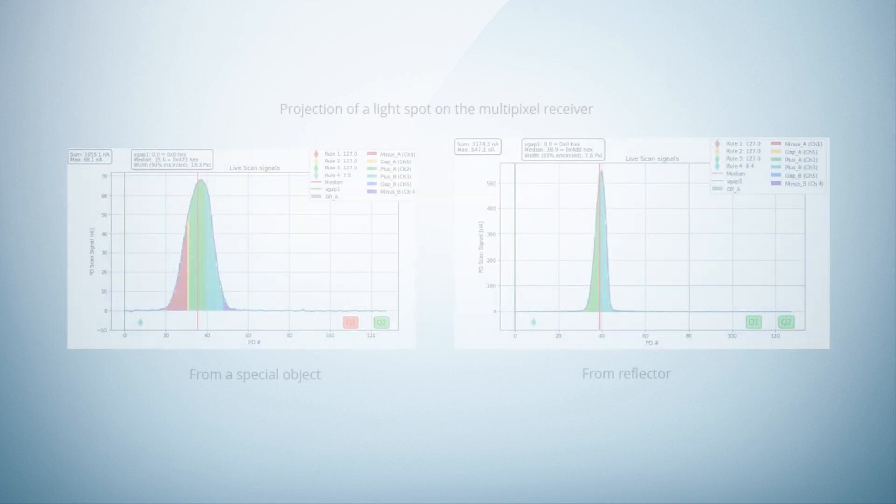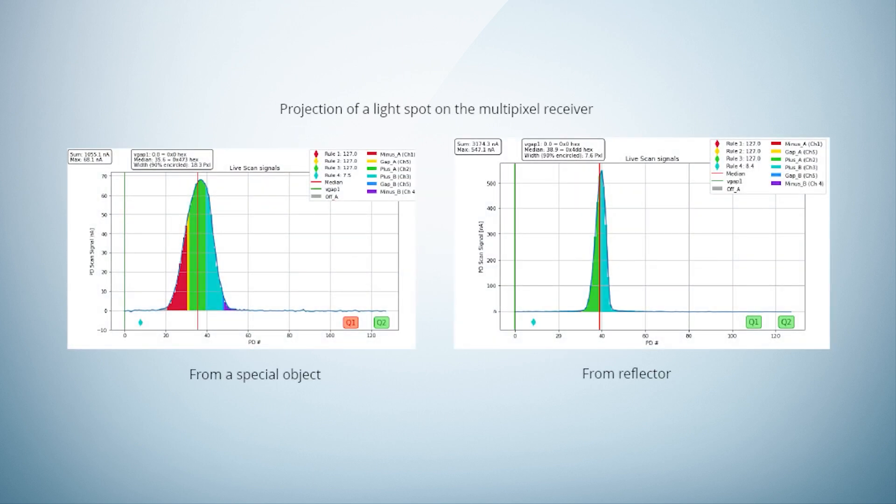The difference between the image of the light spot from the reflector and the special object is very clear and can be detected by the sensor.